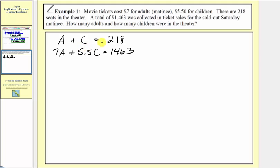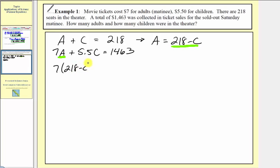To solve this system of equations, we can use addition or substitution. Because we can easily solve the first equation for A or C, let's use substitution. Solving the first equation for A by subtracting C from both sides gives us A equals 218 minus C. We'll now substitute 218 minus C for A in the second equation, giving us: seven times the quantity (218 minus C), plus five point five C, equals one thousand four hundred sixty three.